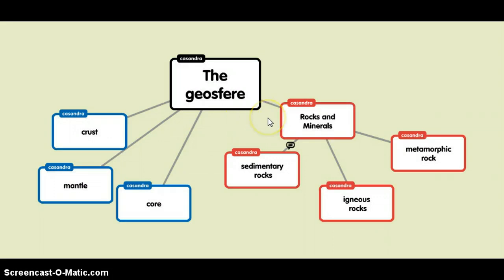There are three types of rocks. Sedimentary rocks are formed from pieces of other rocks. Igneous rocks are formed when magma cools and solidifies.